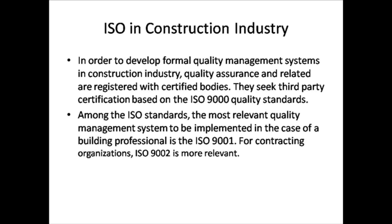ISO in the construction industry: In order to develop formal quality management systems, quality assurance and related services are registered with certified bodies. Construction companies seek third-party certification based on ISO 9000 quality standards. The most relevant quality management system for a building professional is ISO 9001; for a contracting organization, ISO 9002 is more relevant. ISO 9000 can be implemented in any type of company.